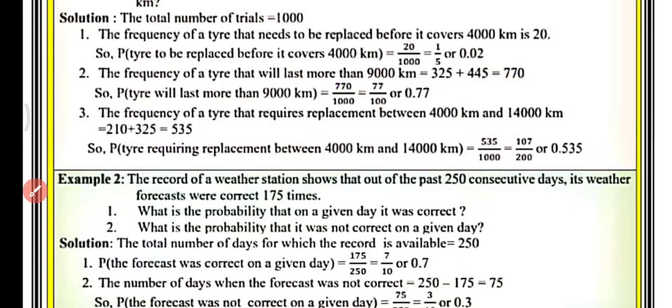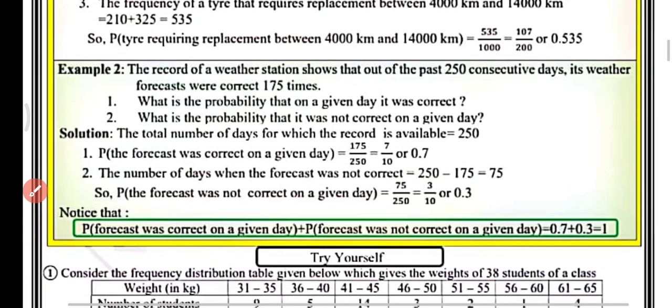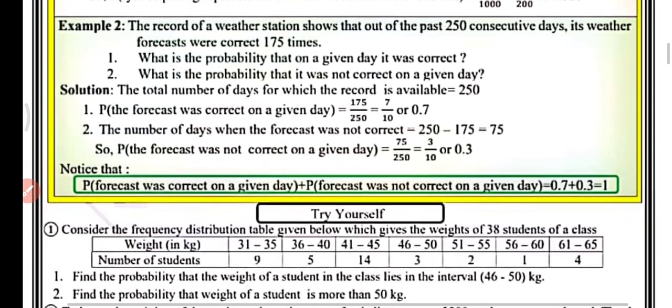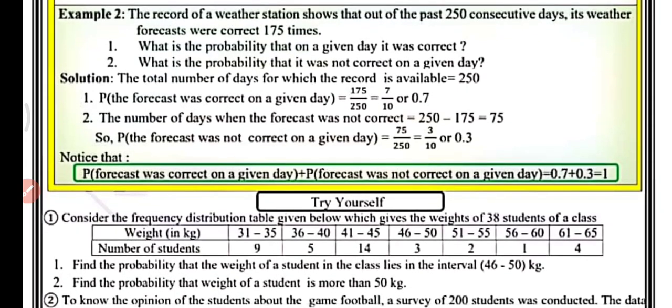Now proceed to example number 2. The record of a weather station shows that out of the past 250 consecutive days, its weather forecasts were correct 175 times. What is the probability that on a given day the forecast was correct? The total number of days for which the record is available is 250, and the number of incorrect forecast days is 75.